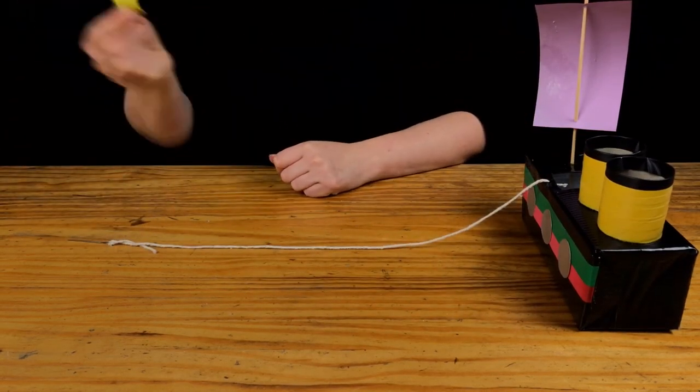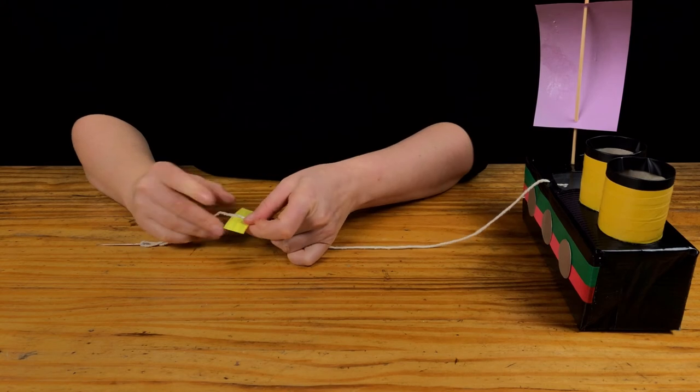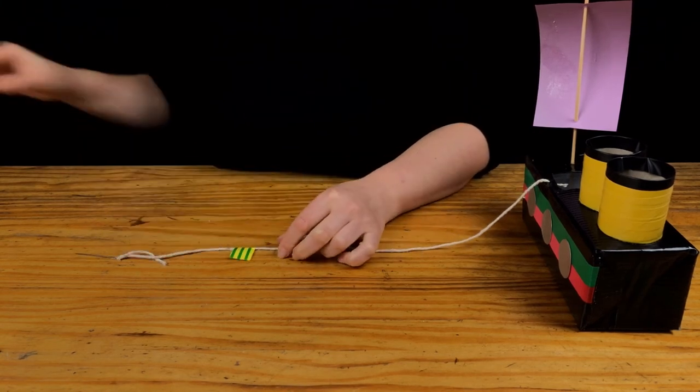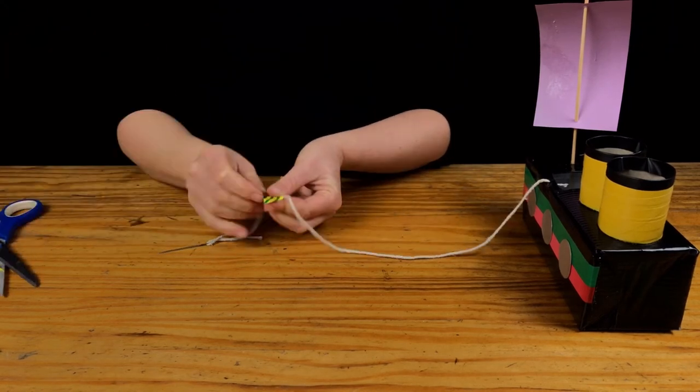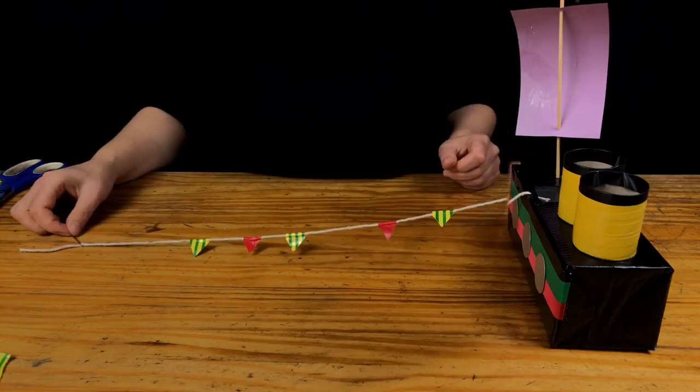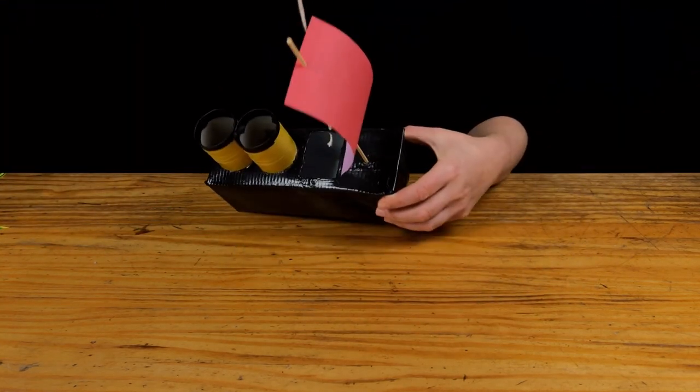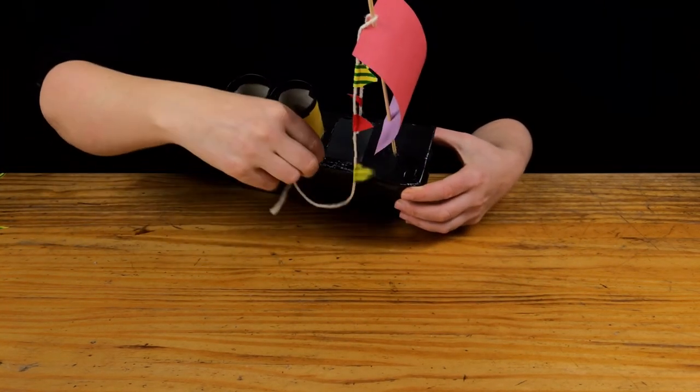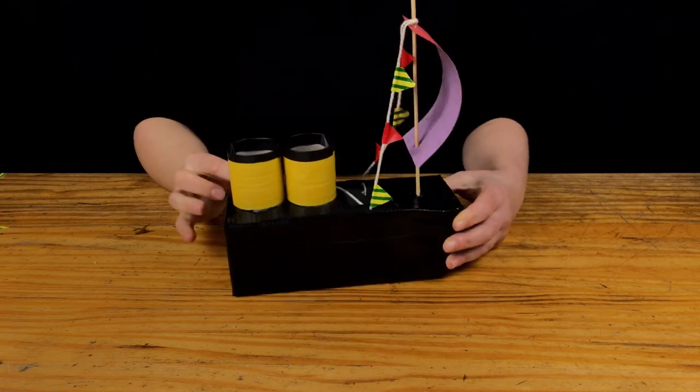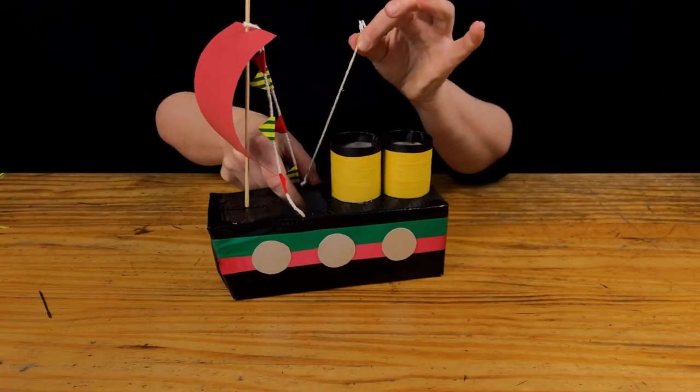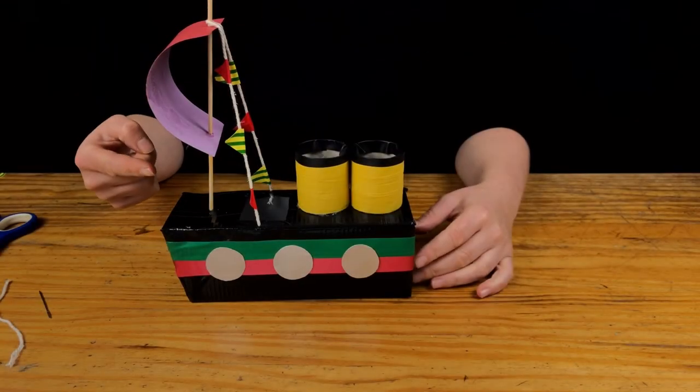Cut small pieces of coloured tape and attach to the string by looping it back on itself. Cut the tape into a triangle shape. Repeat this step by adding flags at regular intervals. Loop the string around the mast again. Thread the needle through the other hole. Tie a knot so that the rope is tight. Trim off any excess string. Your ship is now complete.